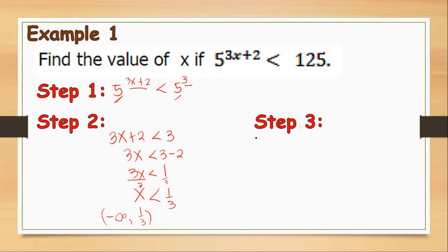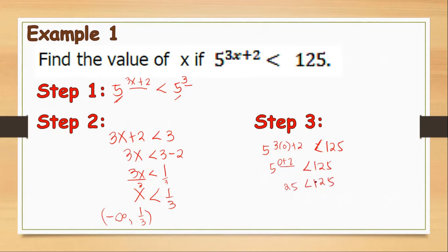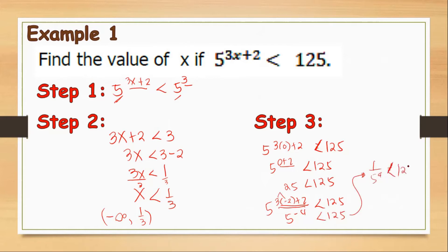Step 3: let's check whether our answer is correct. Trying x = 0: 5^(3·0+2) = 5^2 = 25, and 25 < 125 — correct. Trying x = −2: 5^(3·(−2)+2) = 5^(−6+2) = 5^(−4) = 1/5^4, which is a fraction less than 1, so it is definitely less than 125 — correct.